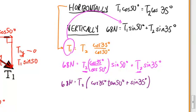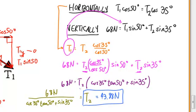And now, I just have a variable on the right-hand side and numbers on the left-hand side. So let me substitute those things into my calculator and come up with a number. I get that T2 is equal to 43.88 Newtons.